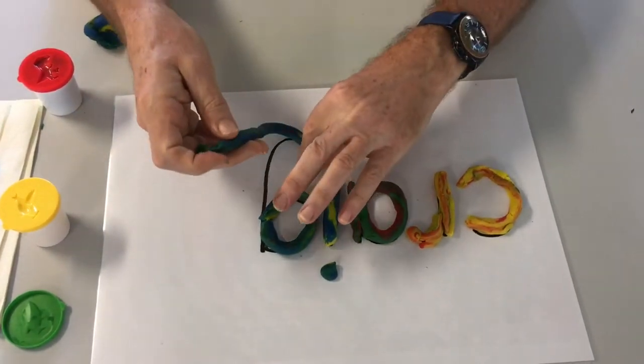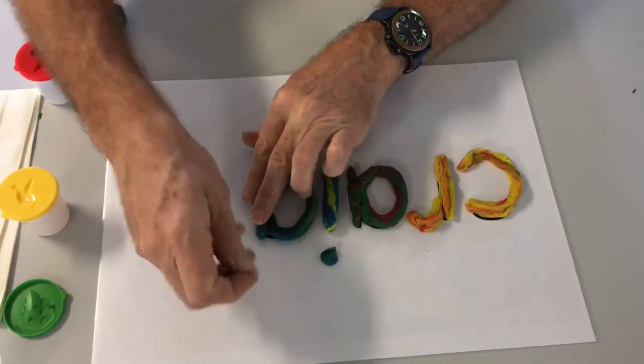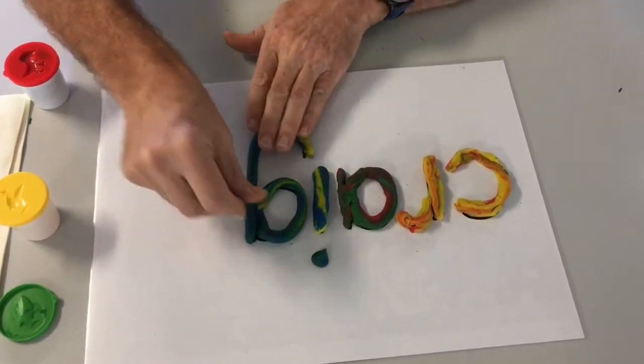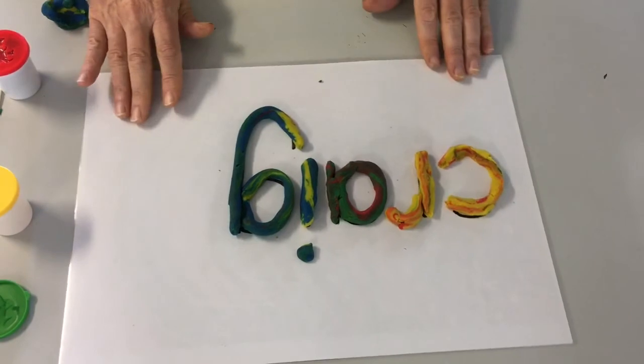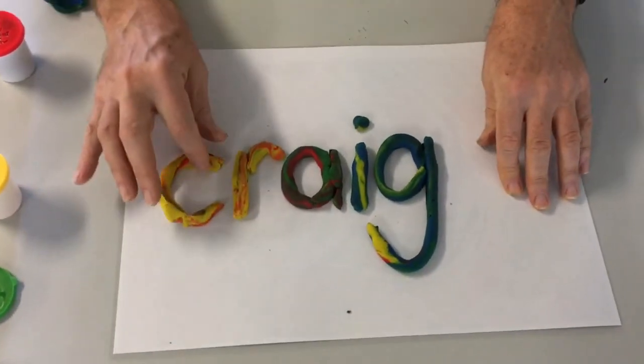Like this, and then bring it around like that. And look at that. Perfect. And therefore I have made my name out of Play-Doh.